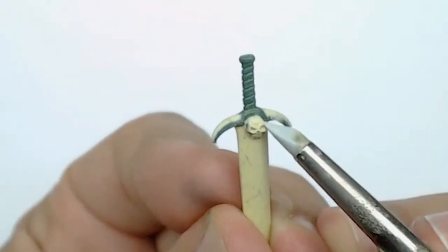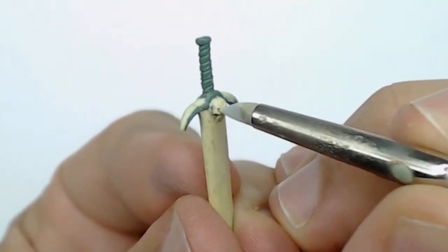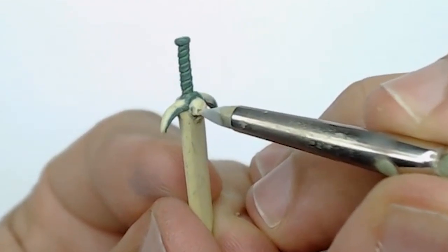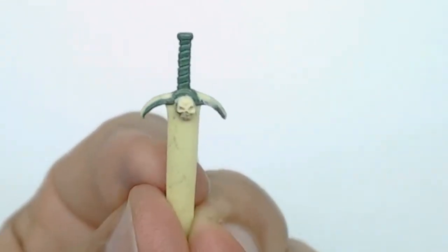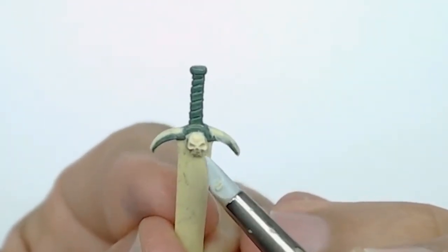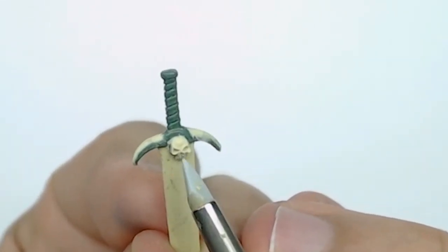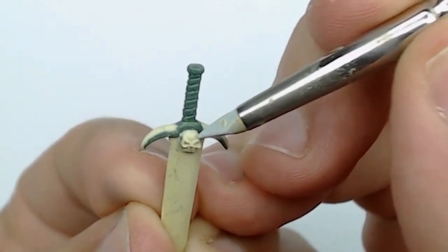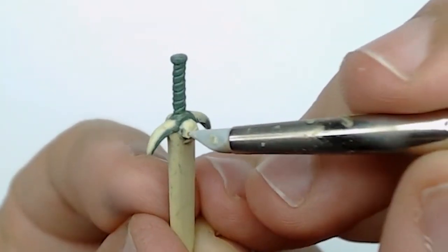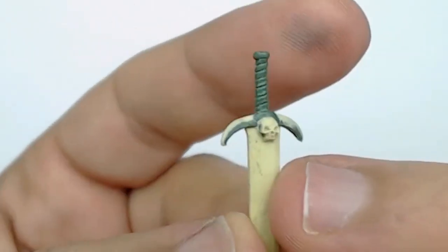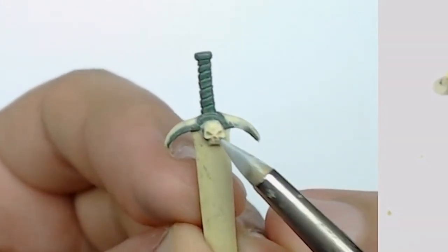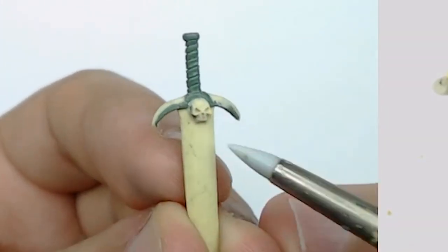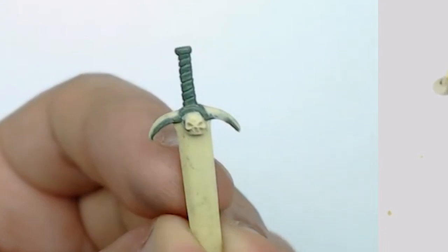Once again, I come back with my color shaper to clean the different surfaces. I've accelerated this video for a quick format. In real time, it takes me about half an hour to sculpt this sword.